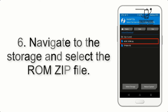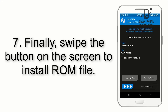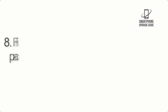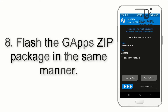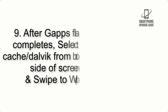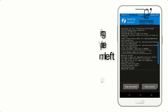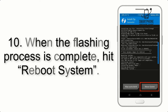Step 6: Navigate to the storage and select the ROM zip file. Step 7: Swipe the button on the screen to install the ROM. Step 8: Flash the GApps zip package in the same manner. Step 9: After GApps flashing completes, select Wipe Cache and Dalvik from the bottom left side of the screen and swipe to wipe.